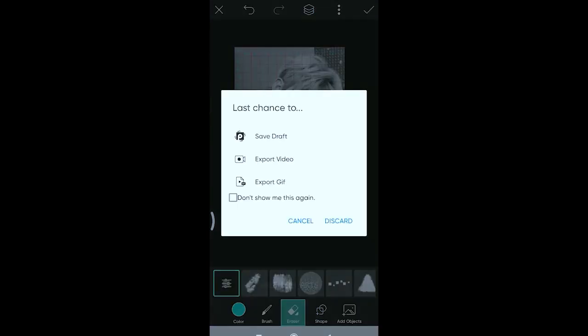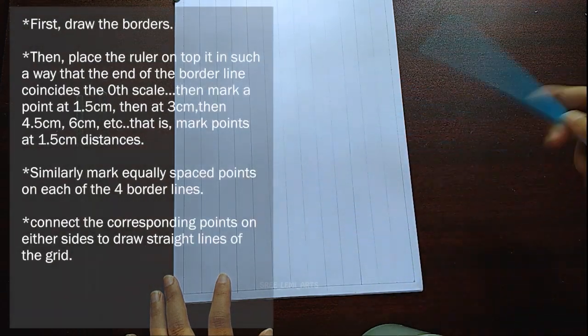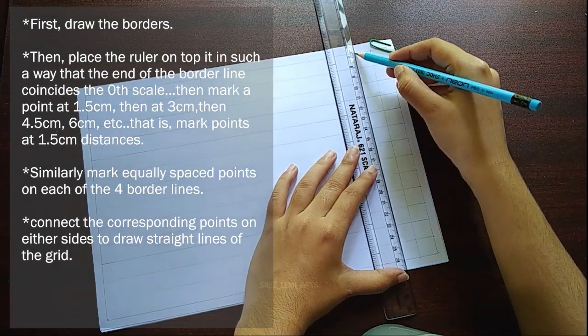Okay, now let's start drawing the grid onto the paper. Two hours later, so I've drawn the vertical lines. Now we'll draw the horizontal lines.